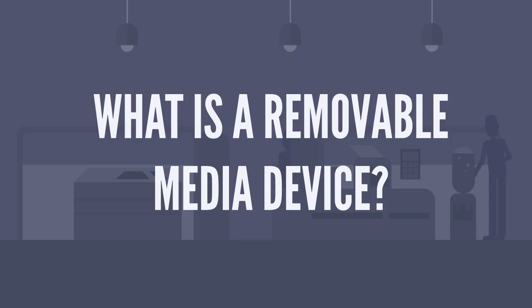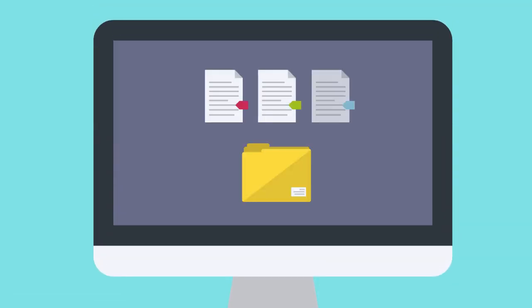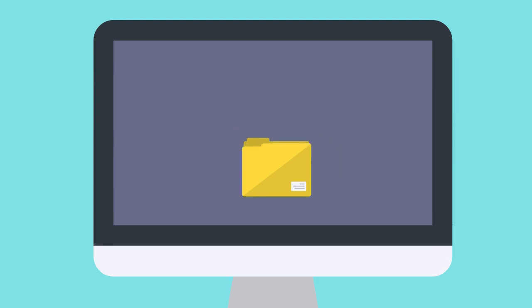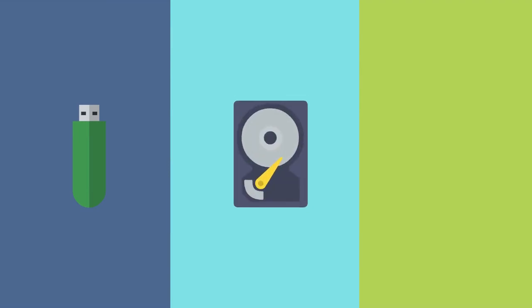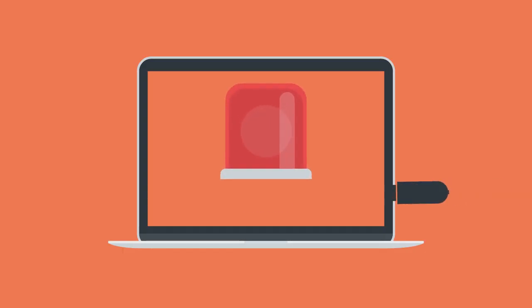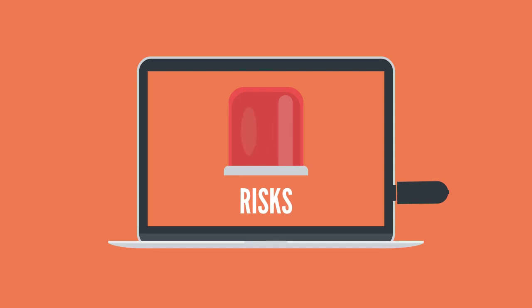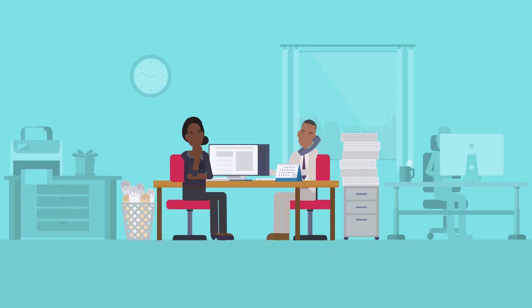What is a removable media device? A removable media device is any portable data storage medium which can be used to carry data off or on site. These can take many forms such as a USB stick, an external hard drive, or a CD.